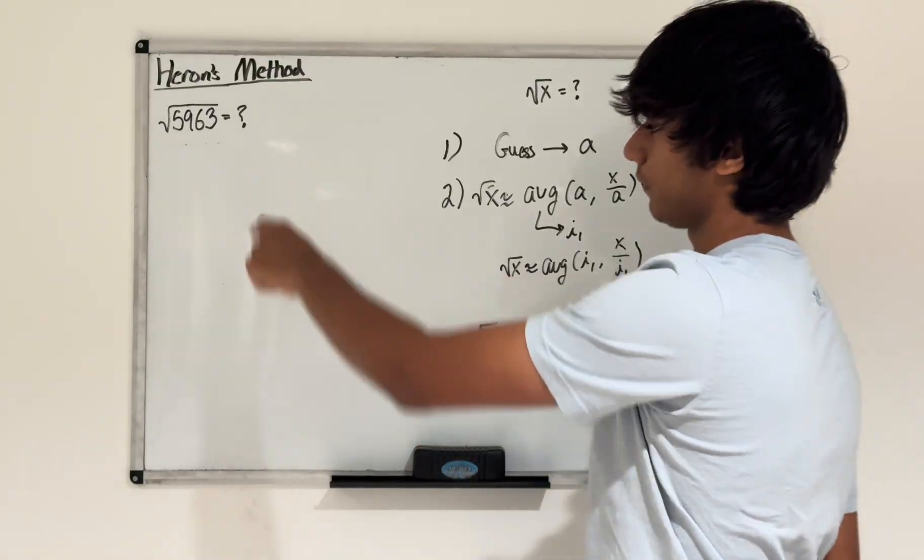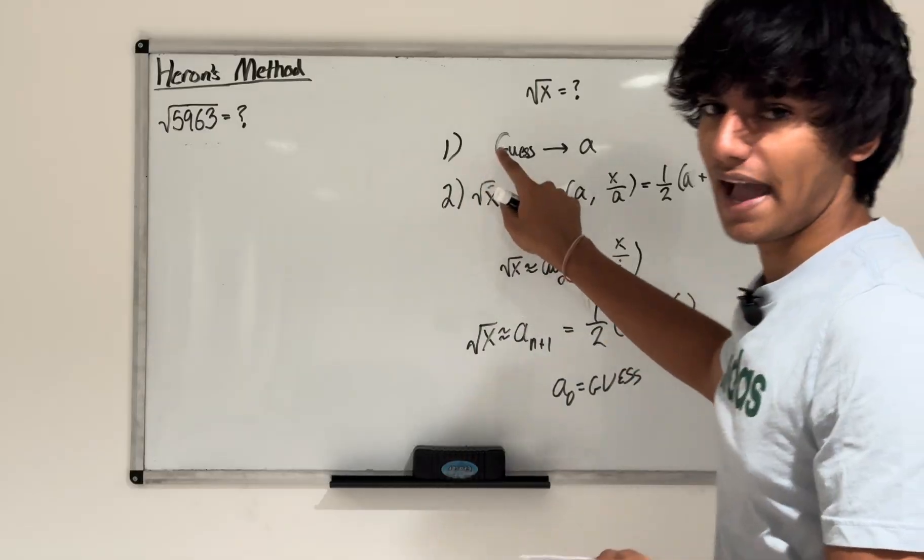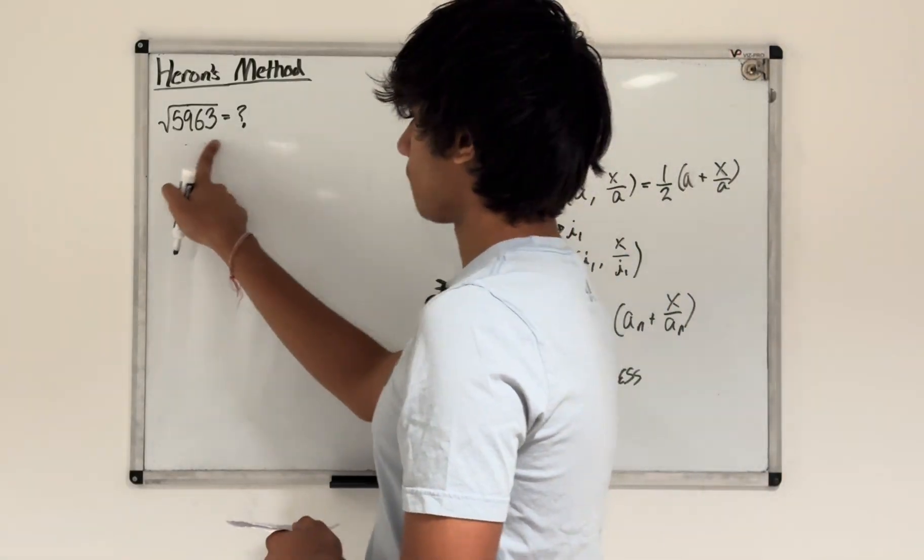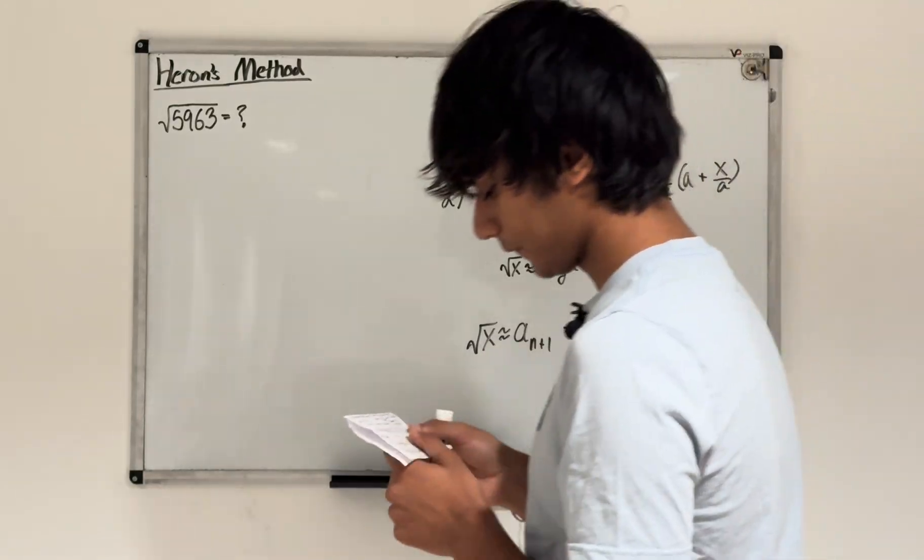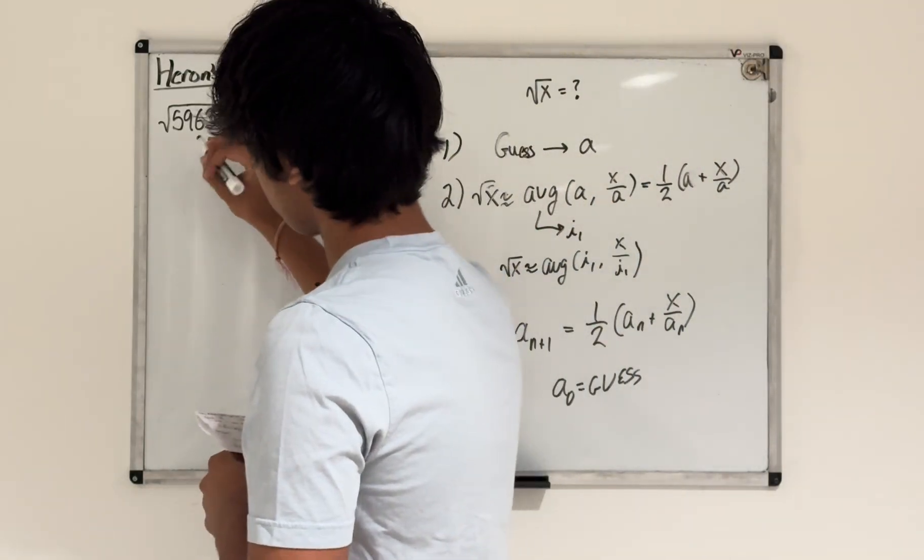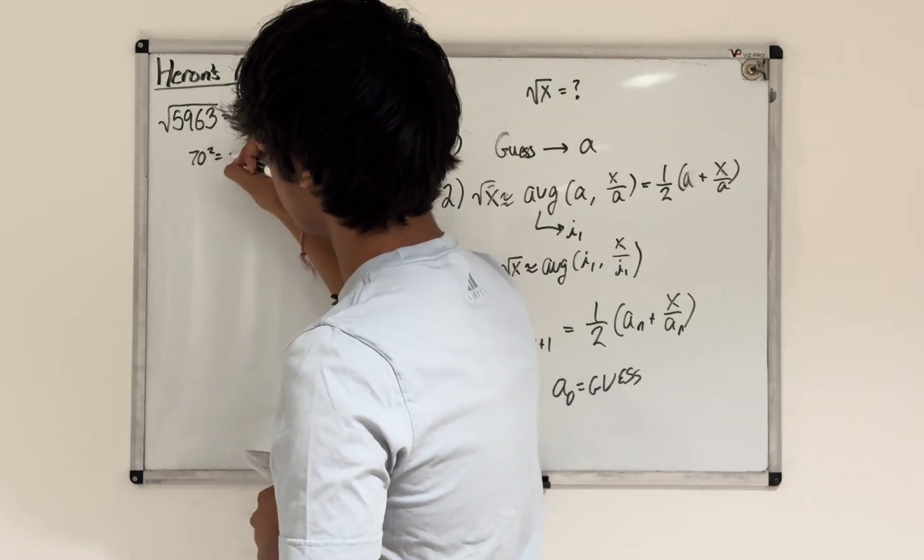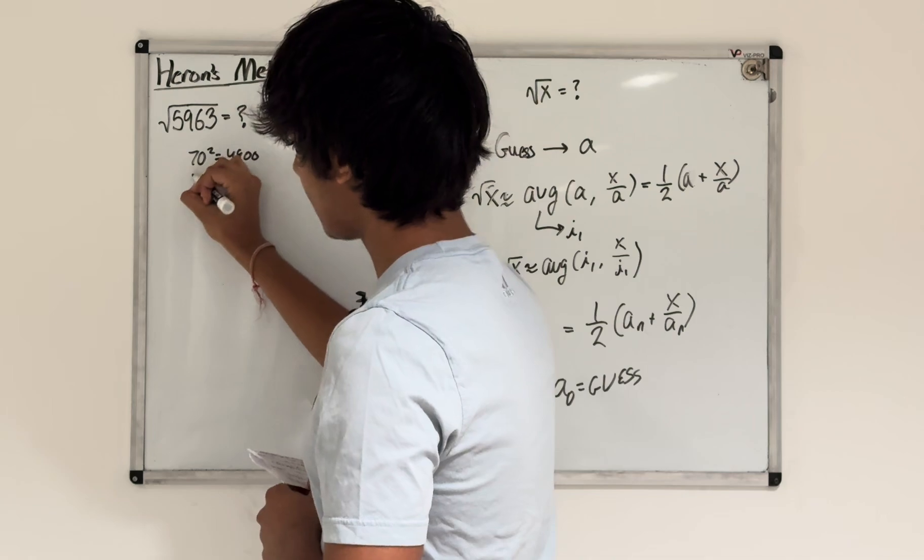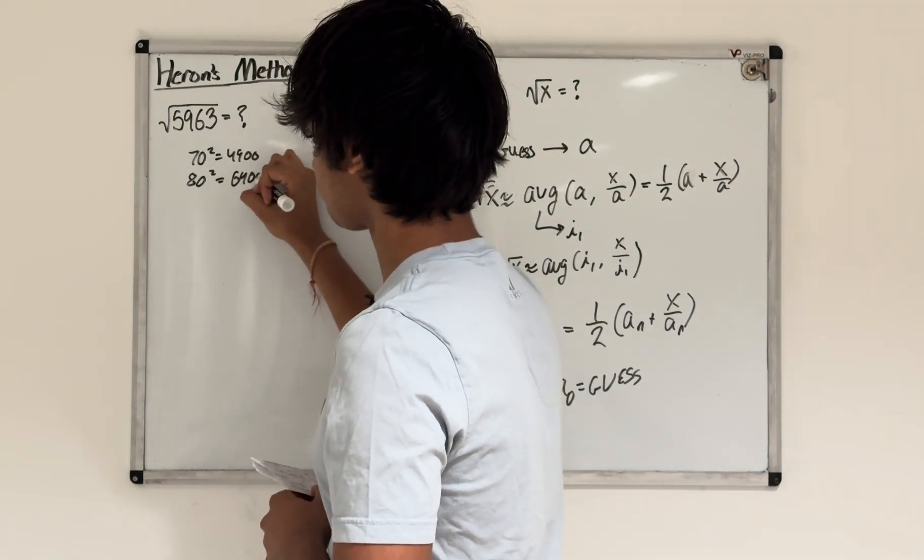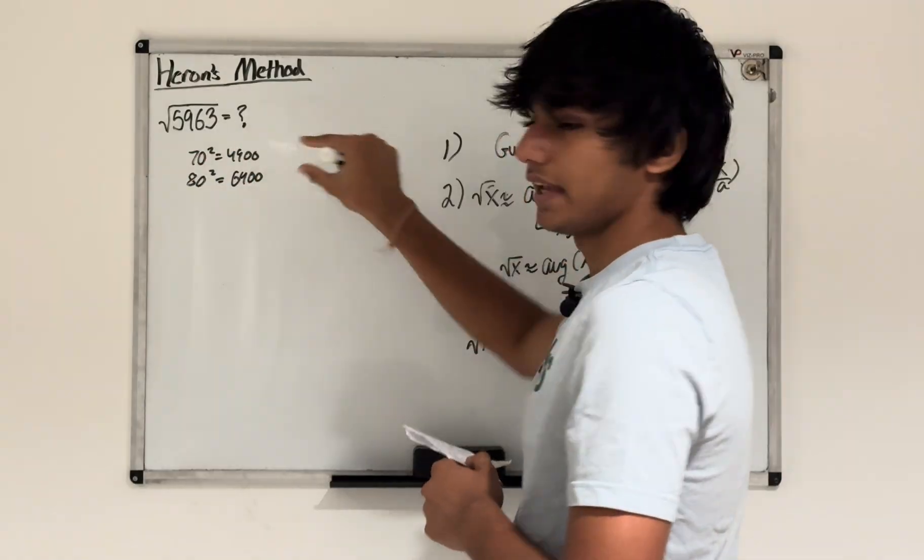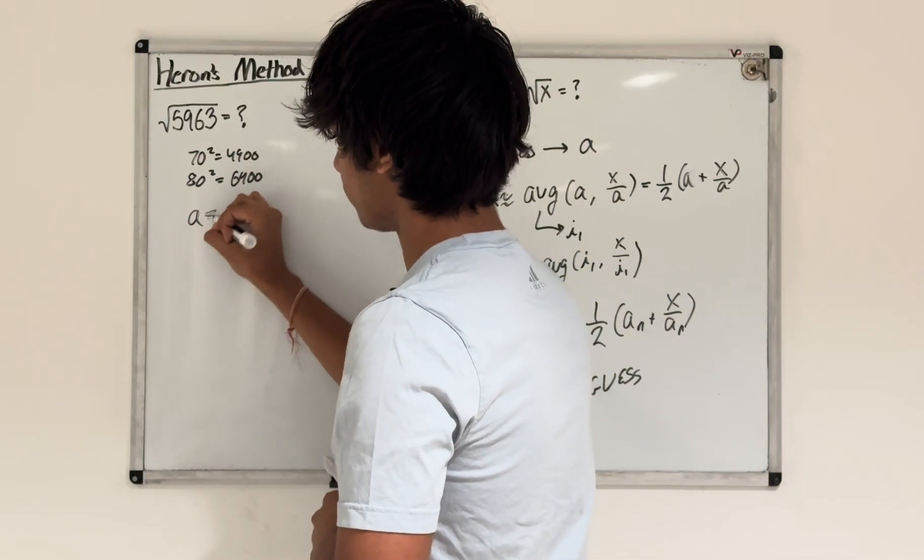Let's try doing this problem now, square root of 5,963, using this process. Our first step is we have to make a guess. Looking at this problem, I want to make a good guess so I can get a good average and a good approximation value. I know that 70 squared is equal to 4,900, and 80 squared is equal to 6,400. 5,963 is kind of in the middle of both. So what if I said my guess, my a value, equal to 75?